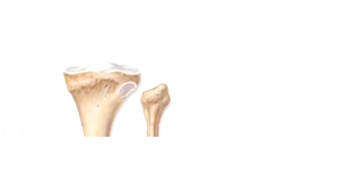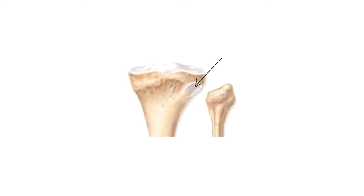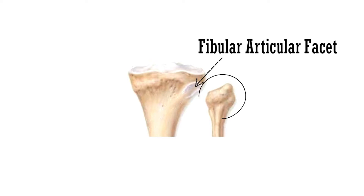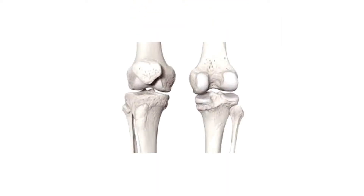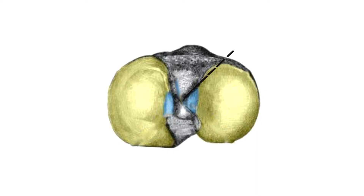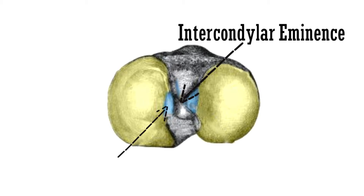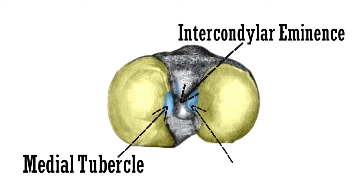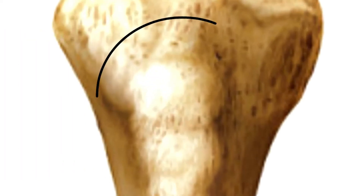Let's have a look. In this image, you can see the area in the light shade — this is the fibular articular facet, where the head of fibula articulates. Looking at another image, you can see how the head of fibula articulates with the fibular articular facet. This is again the superior view of the bone. The area in the middle is the intercondylar eminence, flanked by the medial and lateral tubercles. Lastly, this is the tibial tuberosity on the anterior aspect of the upper end.